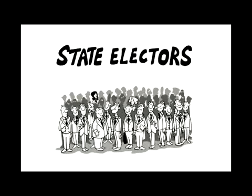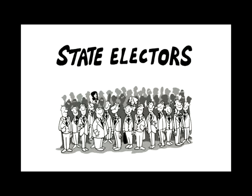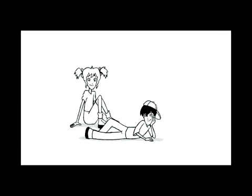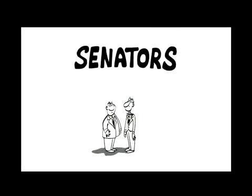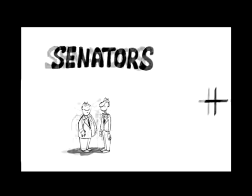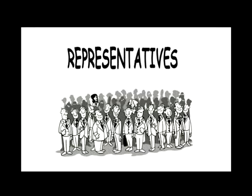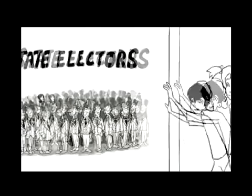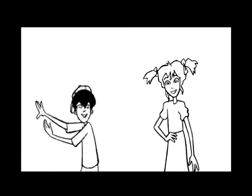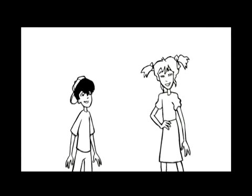The Electoral College gives each state a number of elected representatives called electors, who formally select the president and vice president of the United States. The number of electors in each state equals the number of its congressional senators — always two — plus the number of its congressional representatives, which differs by state based on population. Over time the Electoral College has evolved, though the method for choosing electors has changed several times.